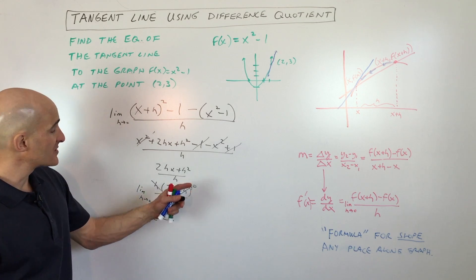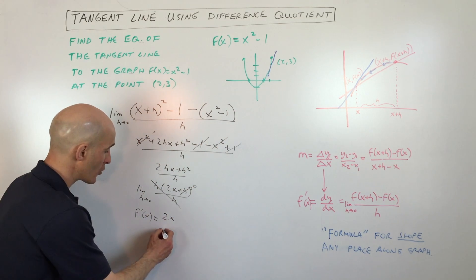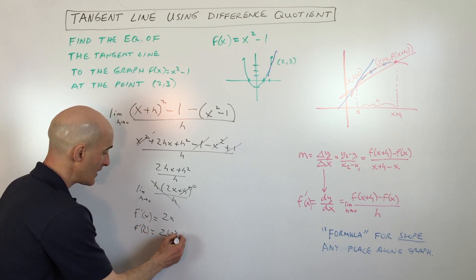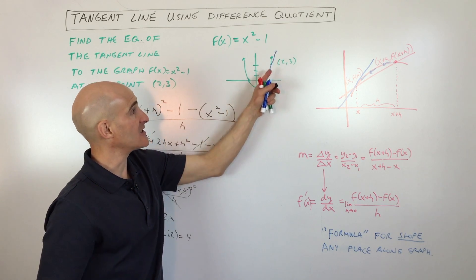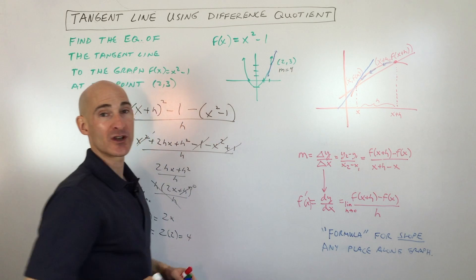If we want to find the slope at this point (2, 3), when x is 2, if we put 2 in here, we get 2 times 2. So f'(2) = 4. So that means the slope of this blue line, the tangent line, is going to be 4. So I'll just write that in here. So m = 4, and we have the point (2, 3).